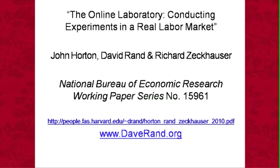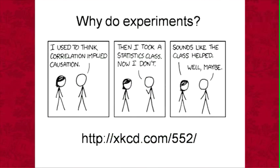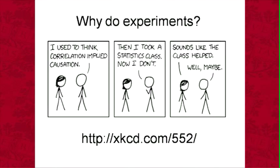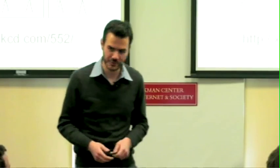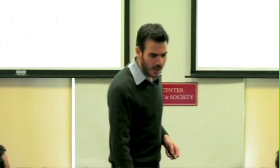I'll start with why we want to do experiments in the first place. There's a nice cartoon from XKCD — the problem is, as the cartoon puts it, correlation doesn't imply causation. That's the problem with so much social science: you see correlations but you can't really infer causation. It's nice to run experiments where you can say, 'I manipulated this thing and something changed, and the only difference between these two groups is what I manipulated,' so you can make causal inference.